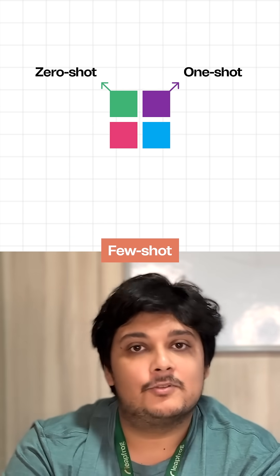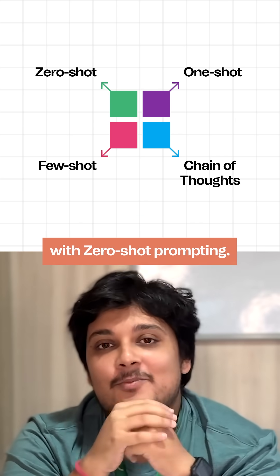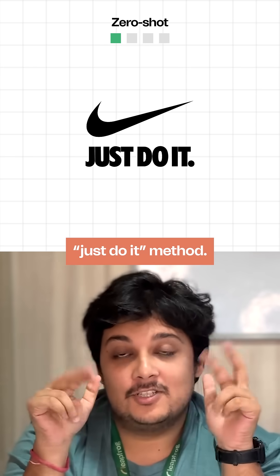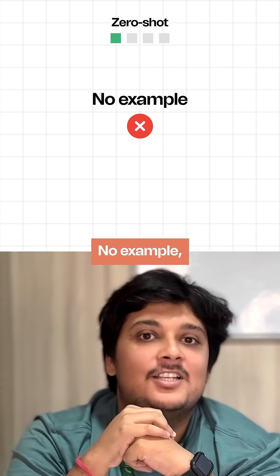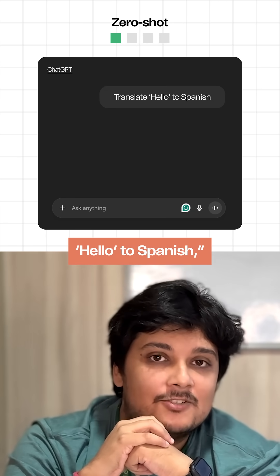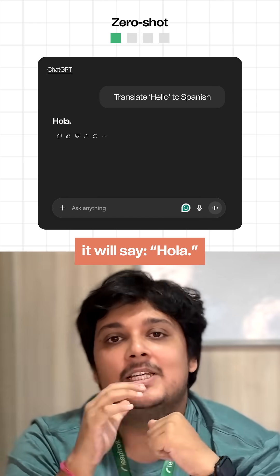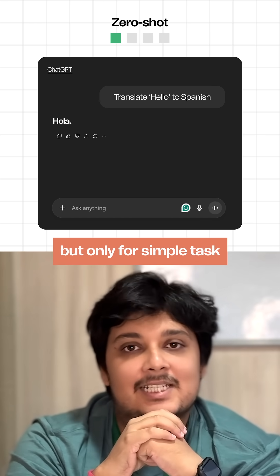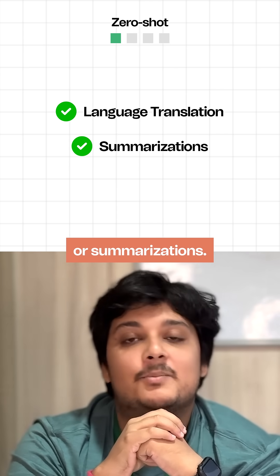Zero-shot, one-shot, few-shot and chain of thoughts. Let's start with zero-shot prompting. This is the just do it method. No example, just instructions. If you ask the AI translate hello to Spanish, it will say hola. This works great but only for simple tasks like language translation or summarizations.